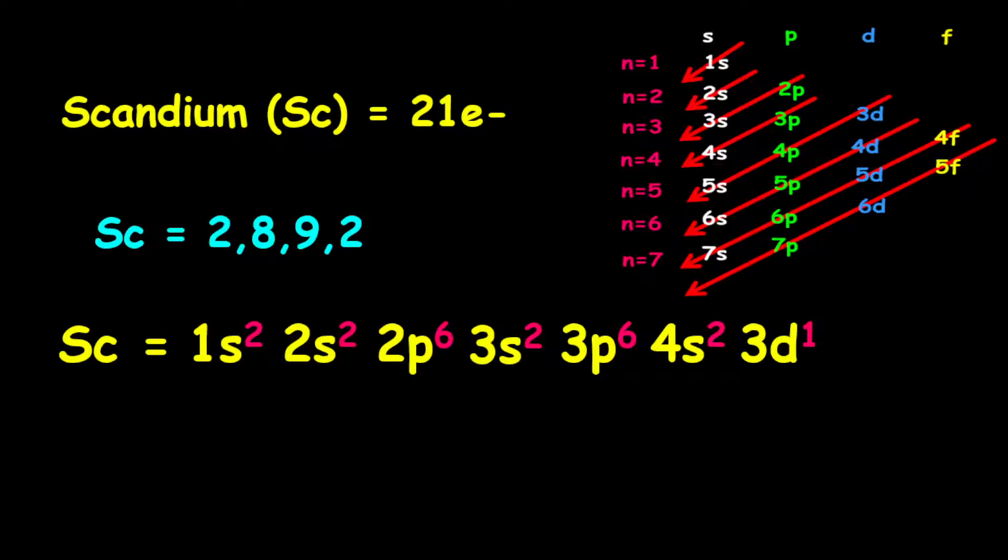Notice this: that the 3s, the 3p, and the 3d orbitals, they all fall on the third shell. Therefore, there's a total of 9 electrons on the third shell.